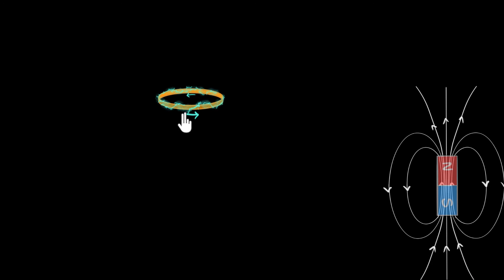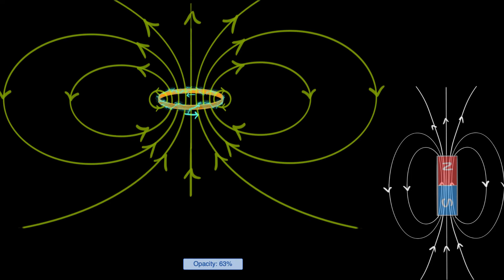In a previous video, we saw that if you have an electric current carrying loop, then it generates a magnetic field that's very similar to that of a bar magnet.